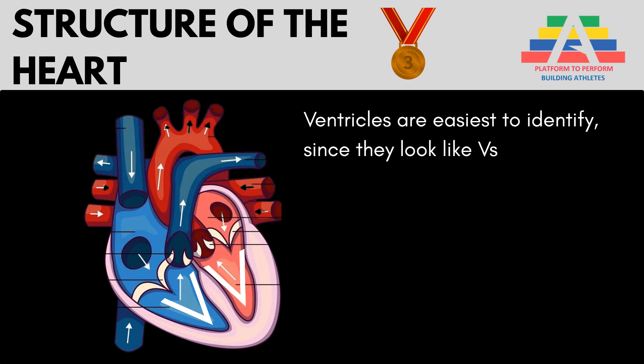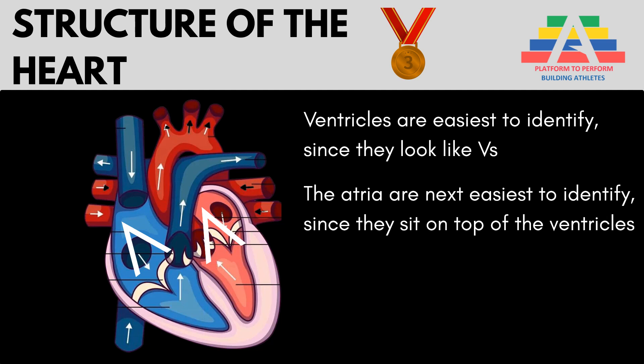The left ventricle has to pump blood around the entire body, whereas the right ventricle only pumps blood to the lungs. One adaptation to training for elite athletes is that their left ventricle wall becomes thicker, as it's able to pump more oxygenated blood to the body. The ventricles are bigger than the atria which sit on top of them, and of the two ventricles the left is the thickest because it pumps the furthest distance.